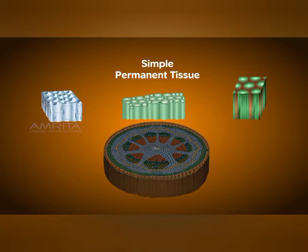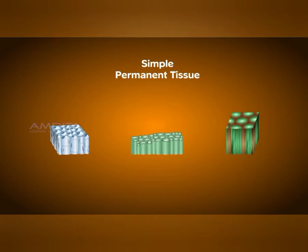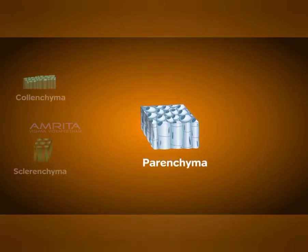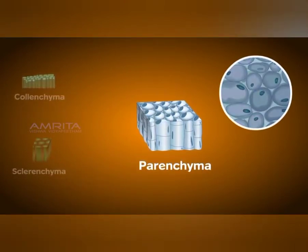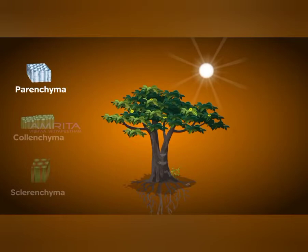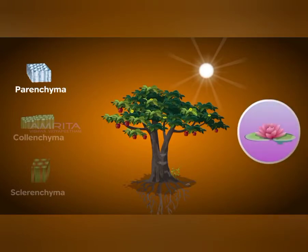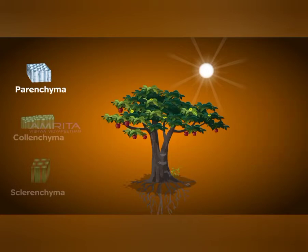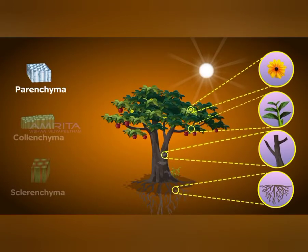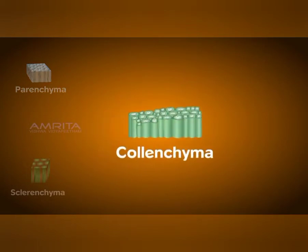Talking about parenchyma — it is a filler tissue, present all over the plant. It generally contains cells which are oval, cylindrical or polygonal in shape. If you observe the cells, they have spaces between them and they have a prominent nucleus. They also have a vacuole which can store food. In some plants it performs photosynthesis and that parenchyma is called chlorenchyma. In some plants like lotus, it helps in floating and is called aerenchyma. It is present in all parts like roots, flower, stem, leaf, etc.